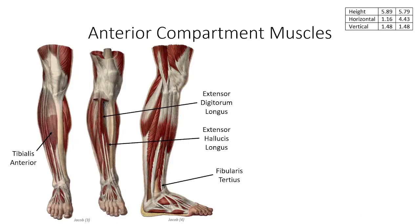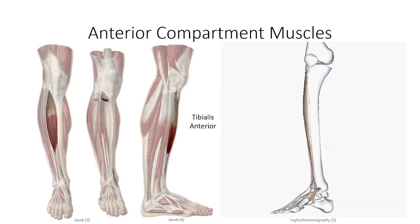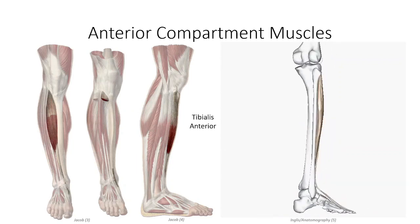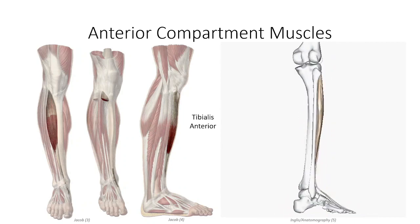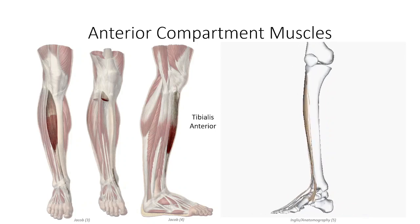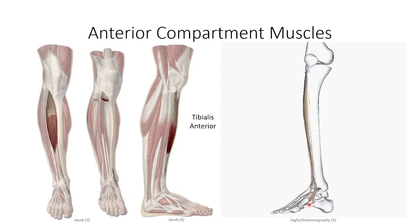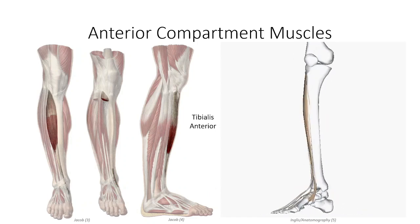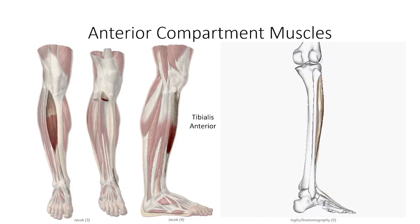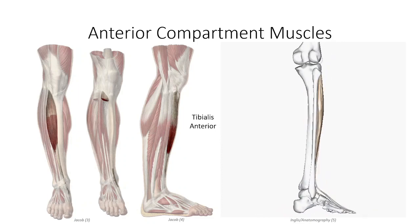Time for a closer look at the anterior compartment. Three major muscles and a vestigial fourth muscle make up this group. Most medial is the prominent tibialis anterior muscle. It originates off the upper two-thirds of the lateral border of the tibia and medial margin of the anterior surface of the interosseous membrane. The tendon then runs inferomedially, passing anterior to the ankle joint to insert on the medial cuneiform and first metatarsal bones of the foot. Contraction of this muscle dorsiflexes and inverts the ankle.